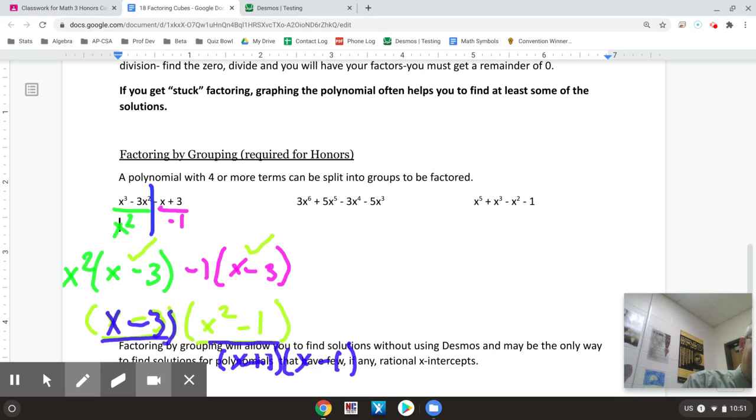So that is the same thing we figured out from our x-intercepts and Desmos without touching a graphing calculator. So x minus three, x plus one, x minus one. Now, one thing that I would still recommend you do, even if you're using this grouping method, is still look for a GCF first.